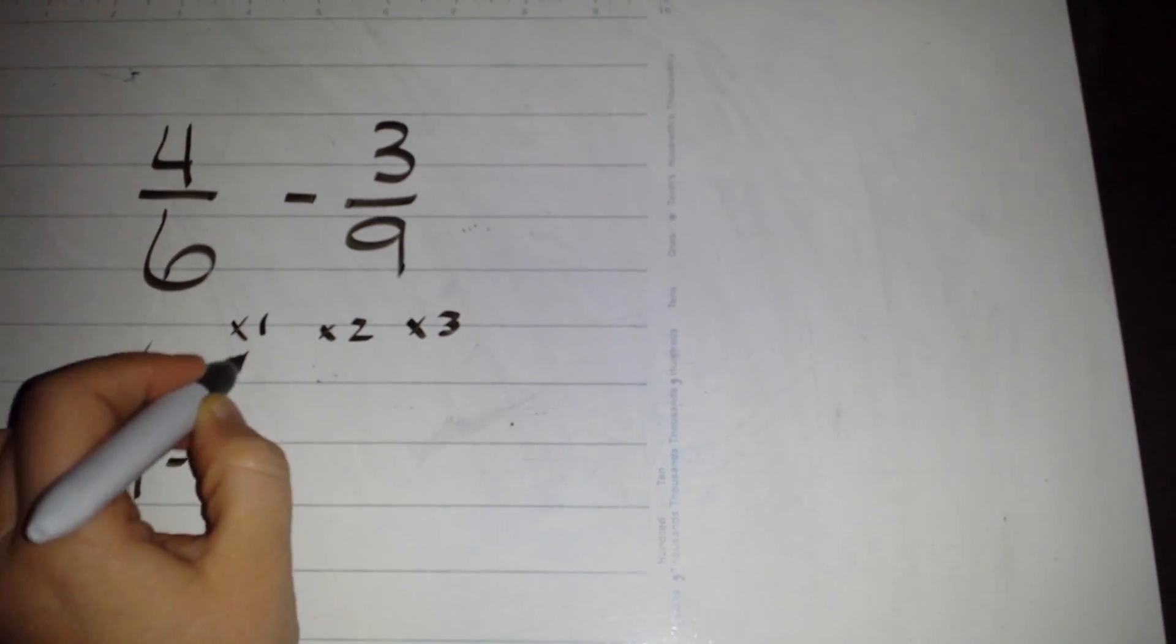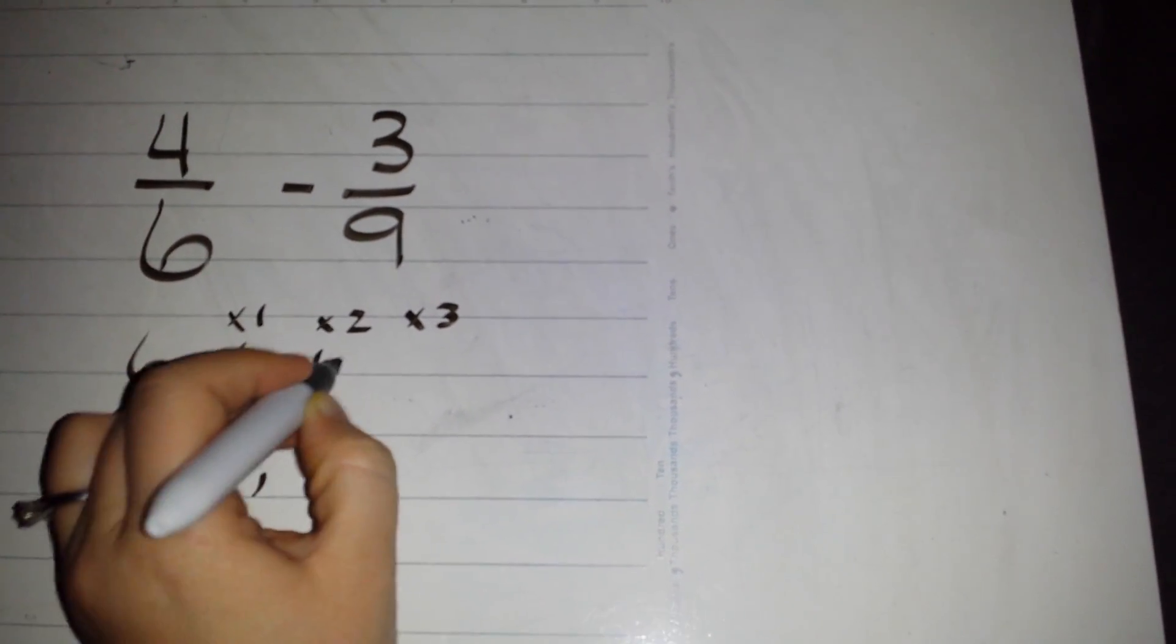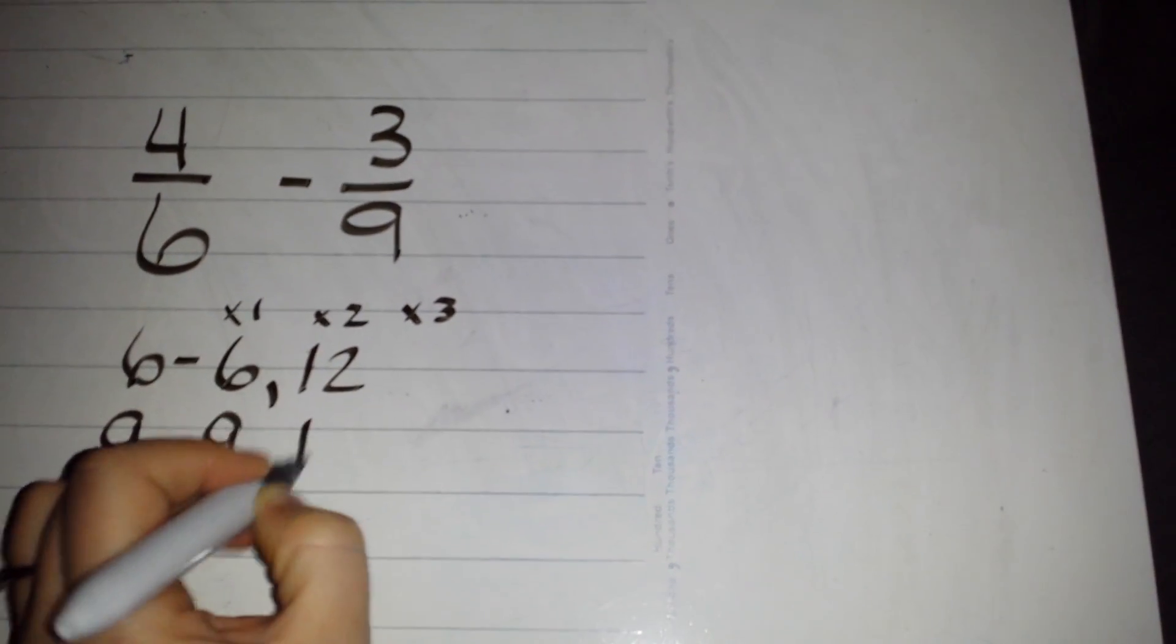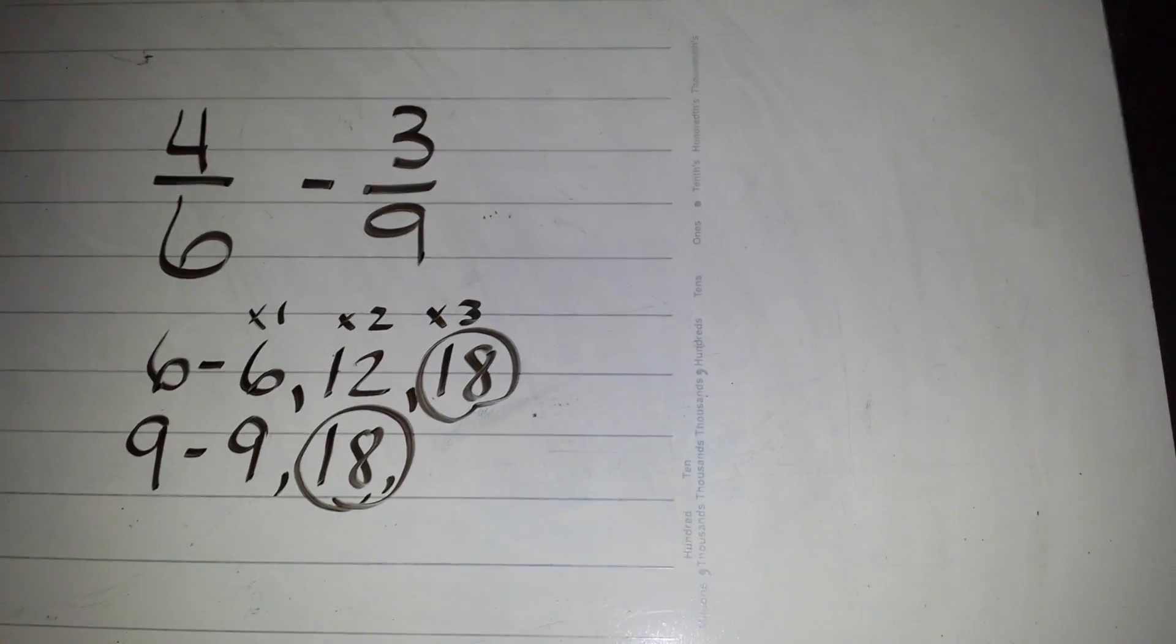So six times one is six, nine times one is nine. Six times two is twelve, nine times two is eighteen. Six times three is eighteen. I don't have to go further because I've already found a common denominator.